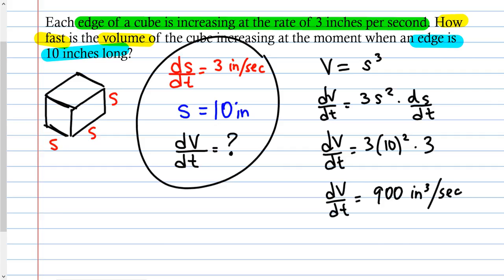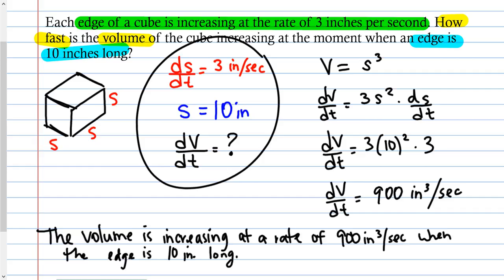This is an FRQ question, so it would be wise to write out your answer explaining what this is. What does dV/dt = 900 inches cubed per second mean? This is the rate at which the volume is increasing when the edge is 10 inches long. The volume is increasing at a rate of 900 inches cubed per second when the edge is 10 inches long.